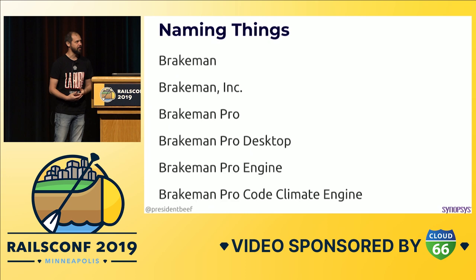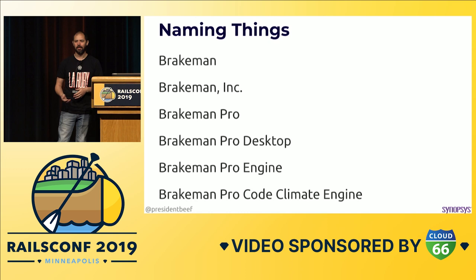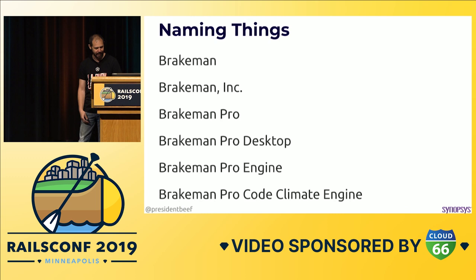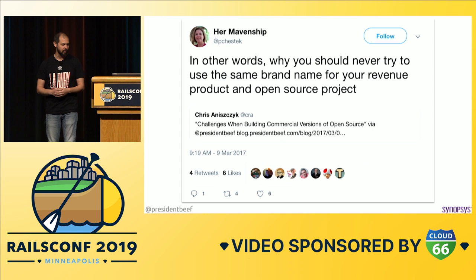There was a thing called Brakeman — the open source project. The company we called Brakeman Inc. Then there was an umbrella thing, Brakeman Pro. Then there was Brakeman Pro Desktop, Brakeman Pro Engine. And then something I could never figure out what to call: the Brakeman Pro Code Climate Engine — because Code Climate also calls their things engines. So we had a thing called engine and they had a thing called engine, and we ended up with two things called engine. Someone else probably could have done a better job on naming these things.